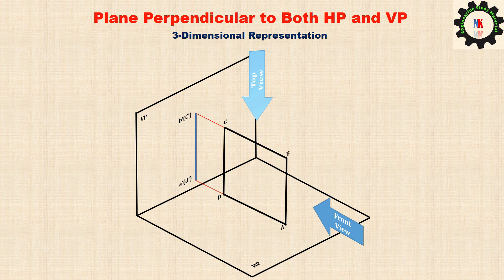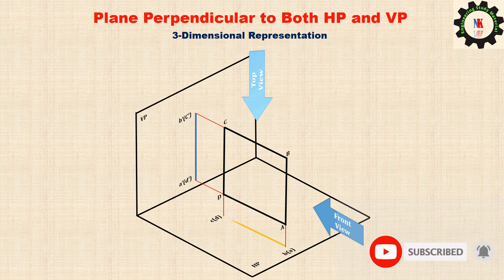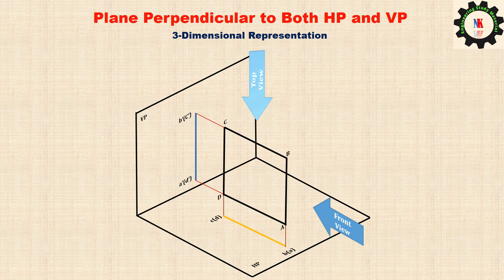To obtain the top view, project each and every corner onto the horizontal plane. Join the corners to obtain the top view. The front view is represented on the vertical plane and top view on the horizontal plane. We can see here both front and top views are represented by a straight line.